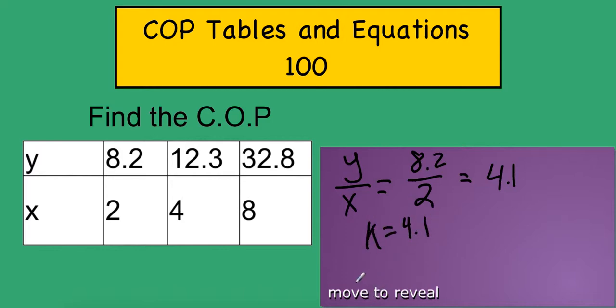If I wanted to write this as an equation, I would say y equals 4.1x. I can double check this. 4.1 times 2 gives me 8.2. Those are my y and x values. And 4.1 times 4 will give me 12.3. So it looks like this works as well.